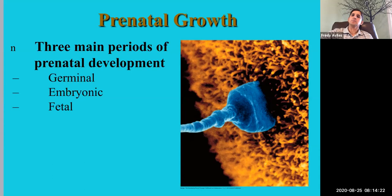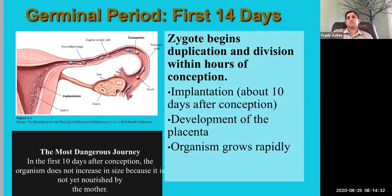The germinal period covers the first 14 days after fertilization. You have a zygote — a fertilized egg with all the genetic material needed to make a human. This zygote begins floating down the uterus while simultaneously dividing. It goes from one cell to two, to four, and so on — within hours of conception it begins to divide, eventually reaching hundreds and then thousands of cells.